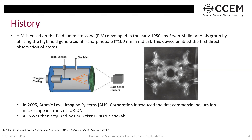There were developments through the 20th century, but nothing reached commercialization until 2005, when a company called Atomic Level Imaging System Corporation introduced the first commercial helium ion microscope, calling it the Orion. The company was later acquired by Carl Zeiss, who introduced the second generation called the Orion Nanofab. Helium ion microscopy is young compared to SEM and gallium FIB, which opens doors to new investigations.